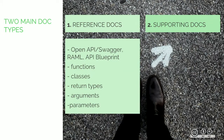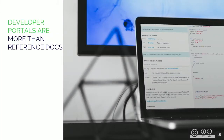Reference documentation contains all the technical information about the API endpoints. Reference documentation refers to the spec — the API spec, Swagger, RAML, API Blueprint, and so on. It is deeply technical and aimed at developers, but developer portals are more than just reference-based docs.